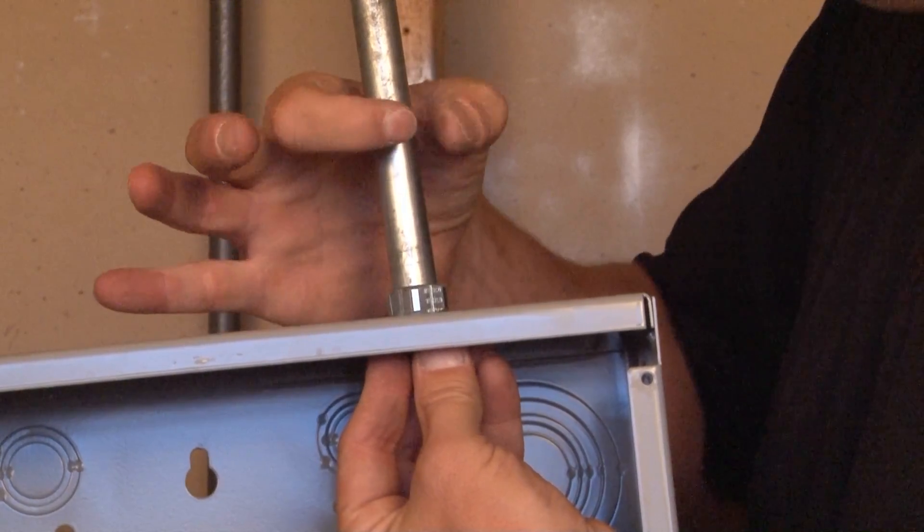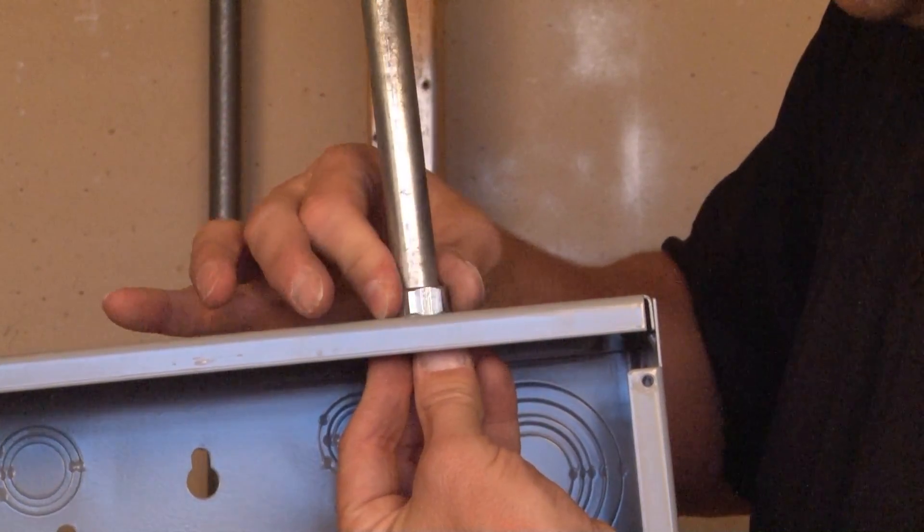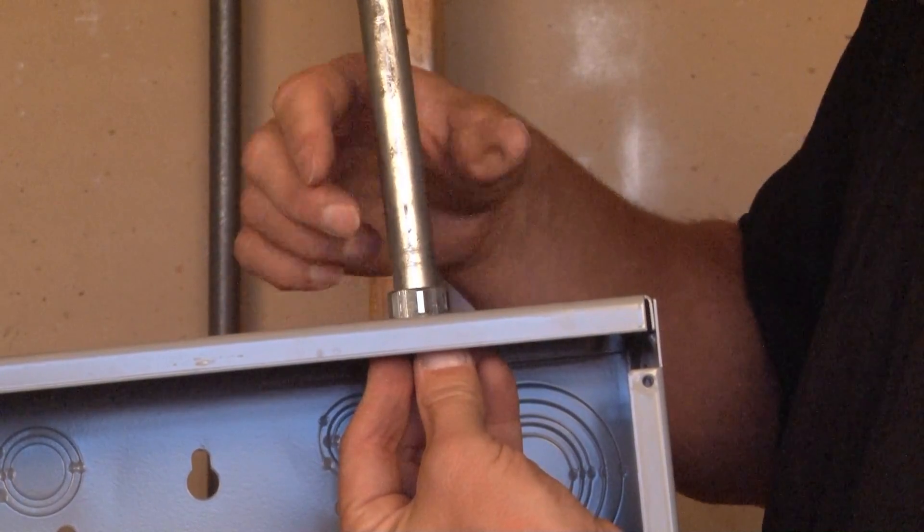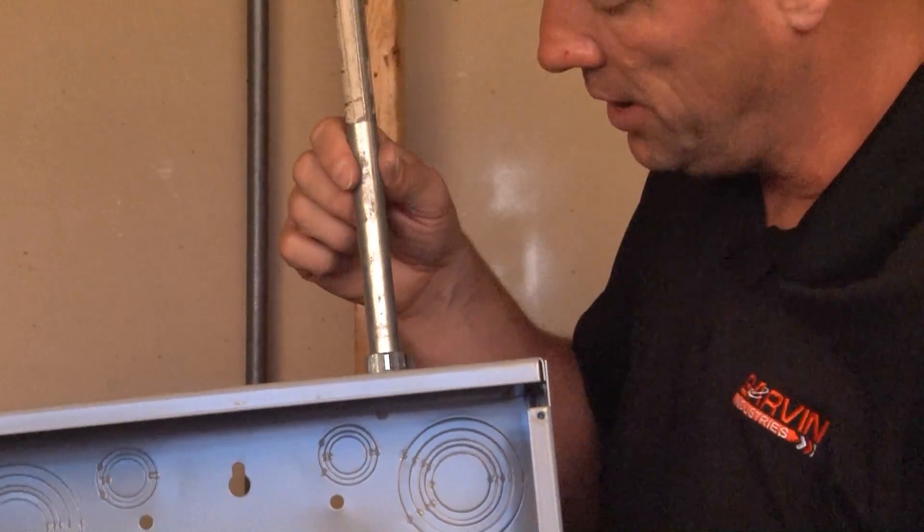This connector will then bite on the conduit as you tighten it to give a secure installation every time. You're now ready to pull wires.